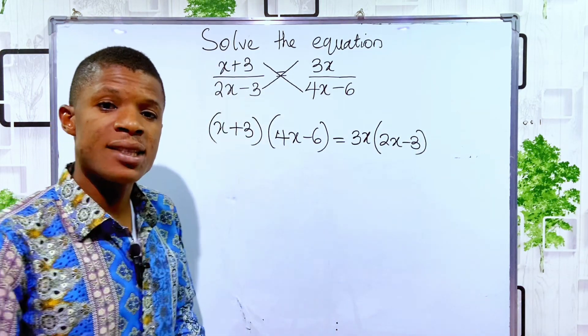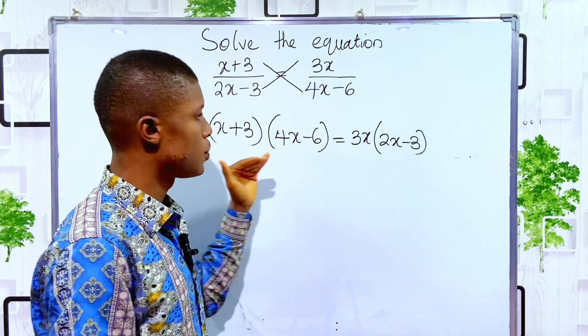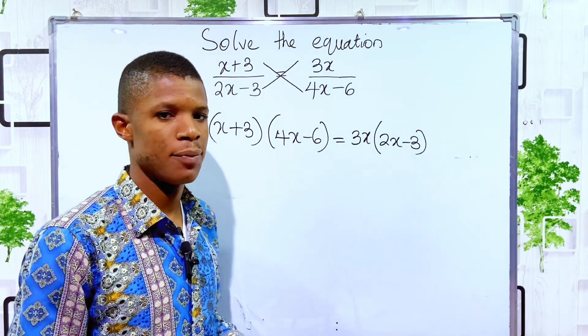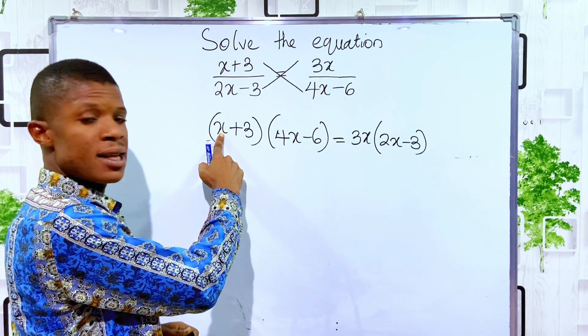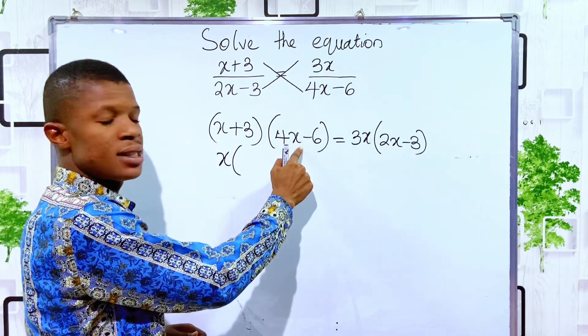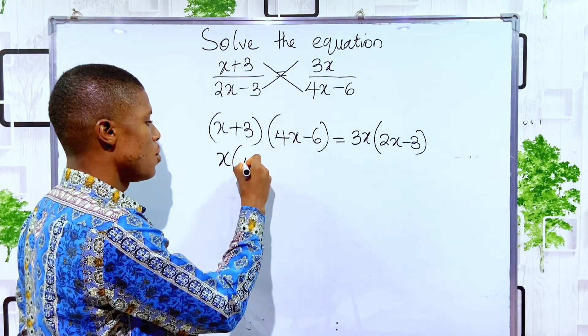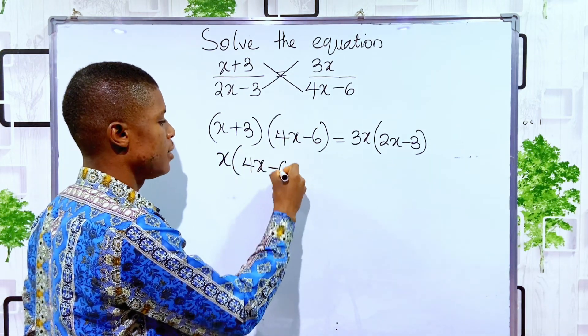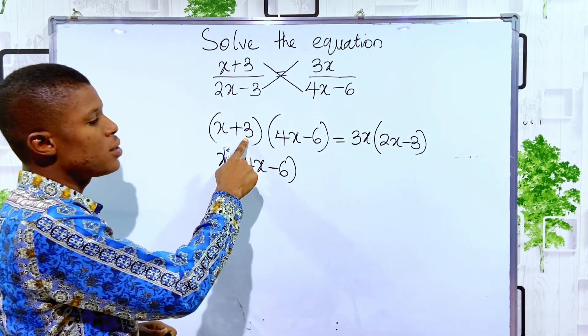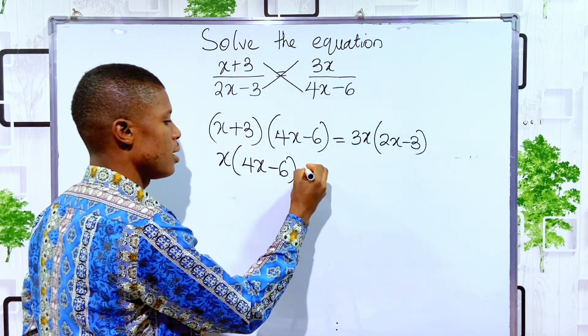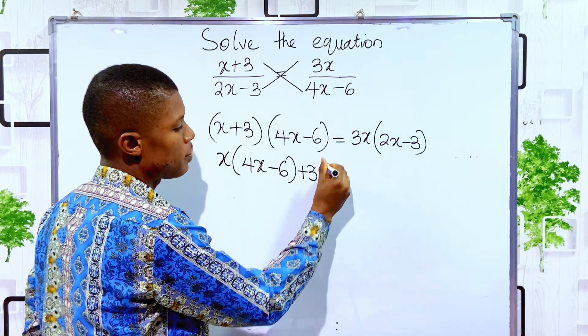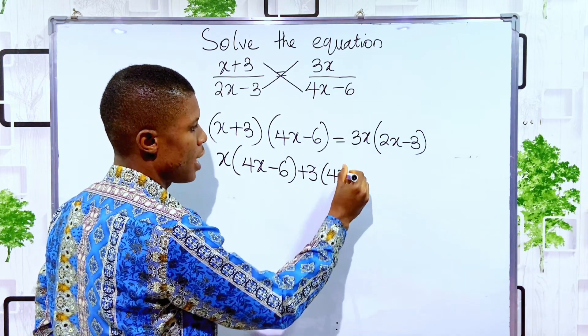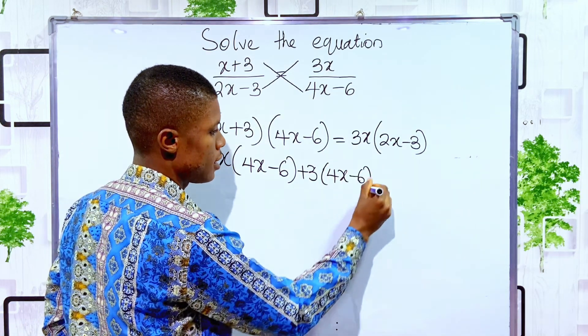The next thing we are going to do is to expand the bracket. To expand this type of bracket, we use the first term x to multiply everything in the second bracket, which is 4x minus 6. Then we use the second term plus 3 to multiply everything in the same bracket, 4x minus 6.